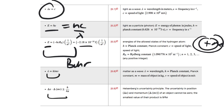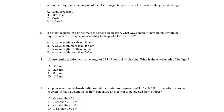Lambda equals h over mv is the de Broglie wavelength — the wavelength of matter as a function of its mass and velocity, most important for the electron. The Heisenberg uncertainty principle: delta x times m times delta v is greater than or equal to h over 4 pi, describing the uncertainty in the position and velocity of an electron. Along with the wave-like behavior of electrons, this led to the concept of orbitals and probability distributions using quantum mechanics.